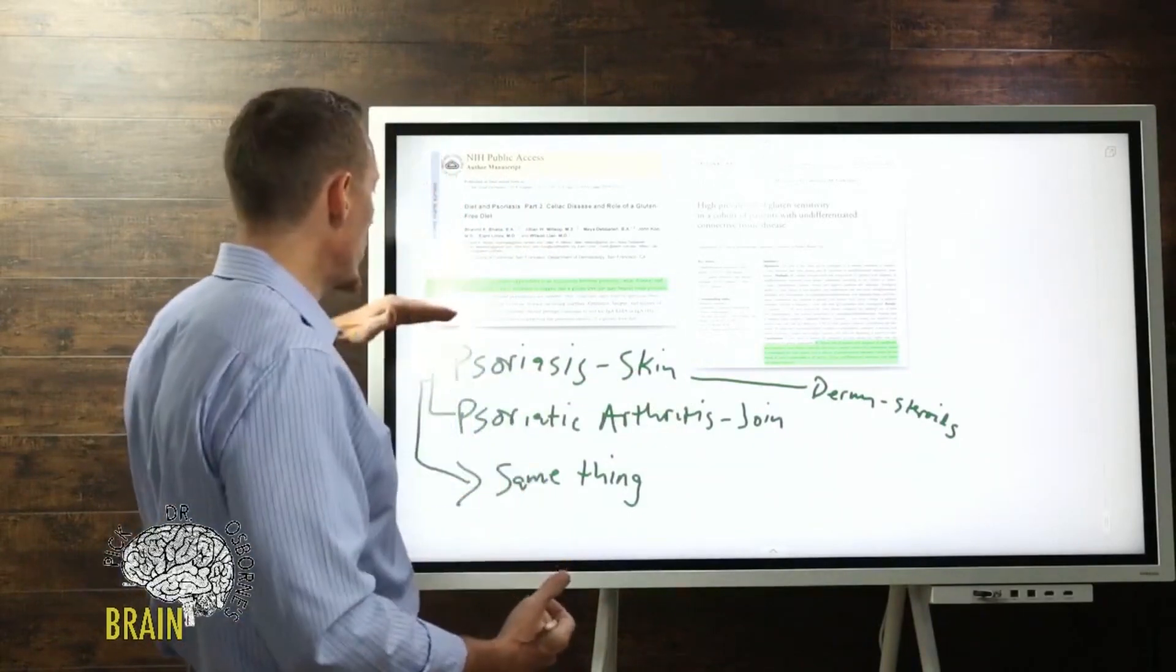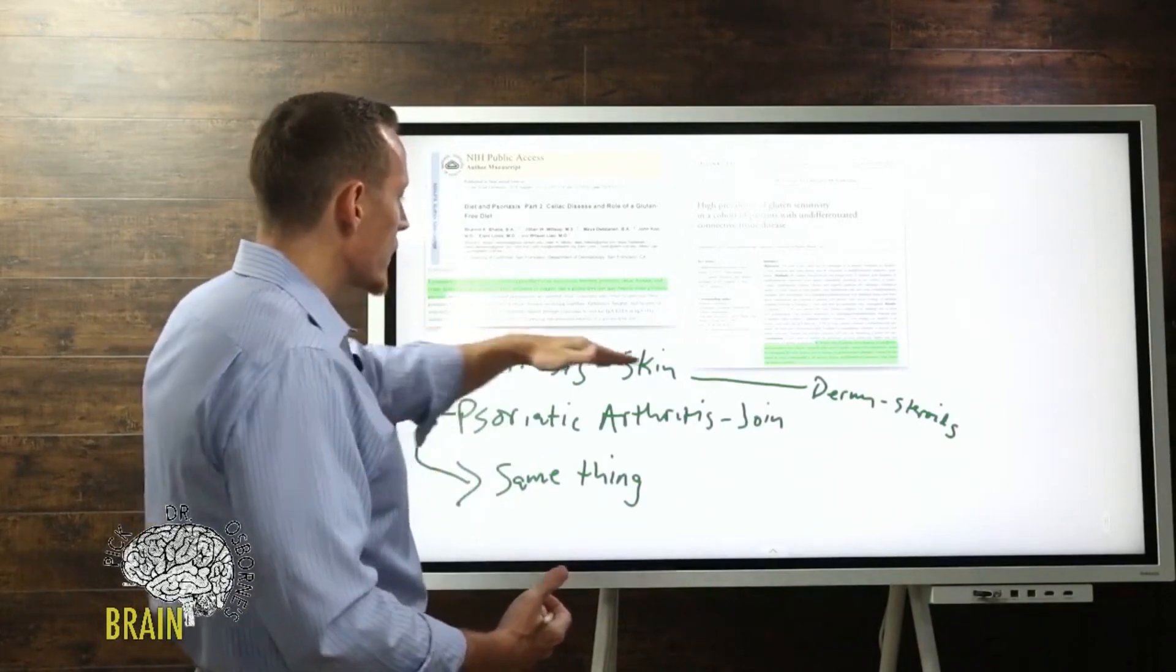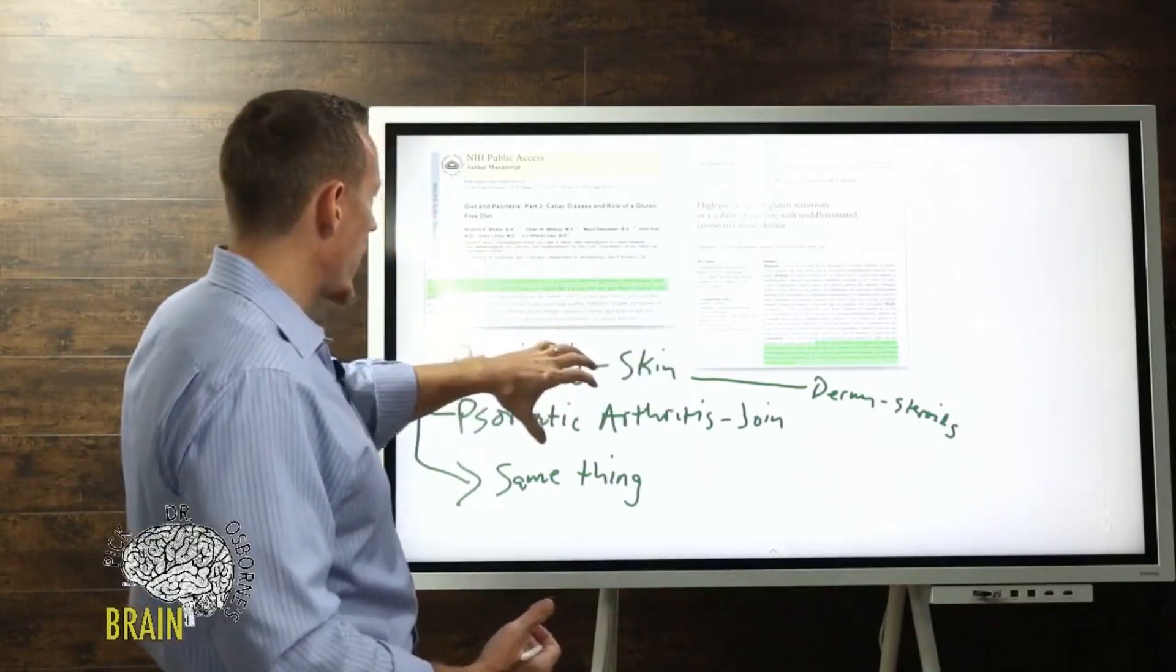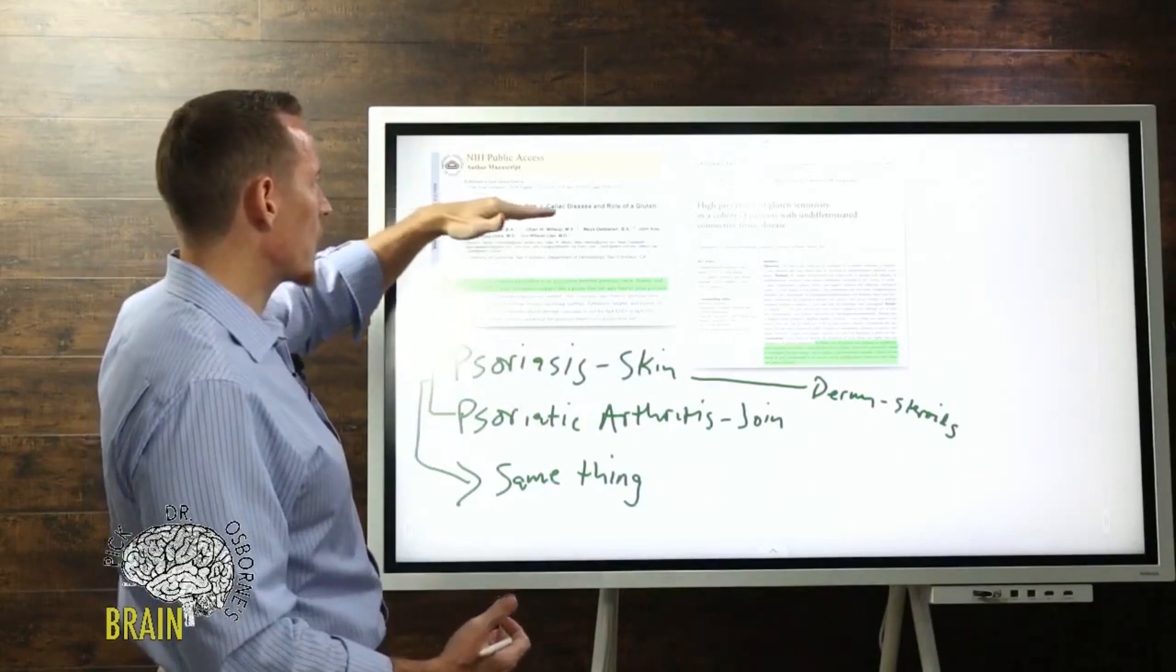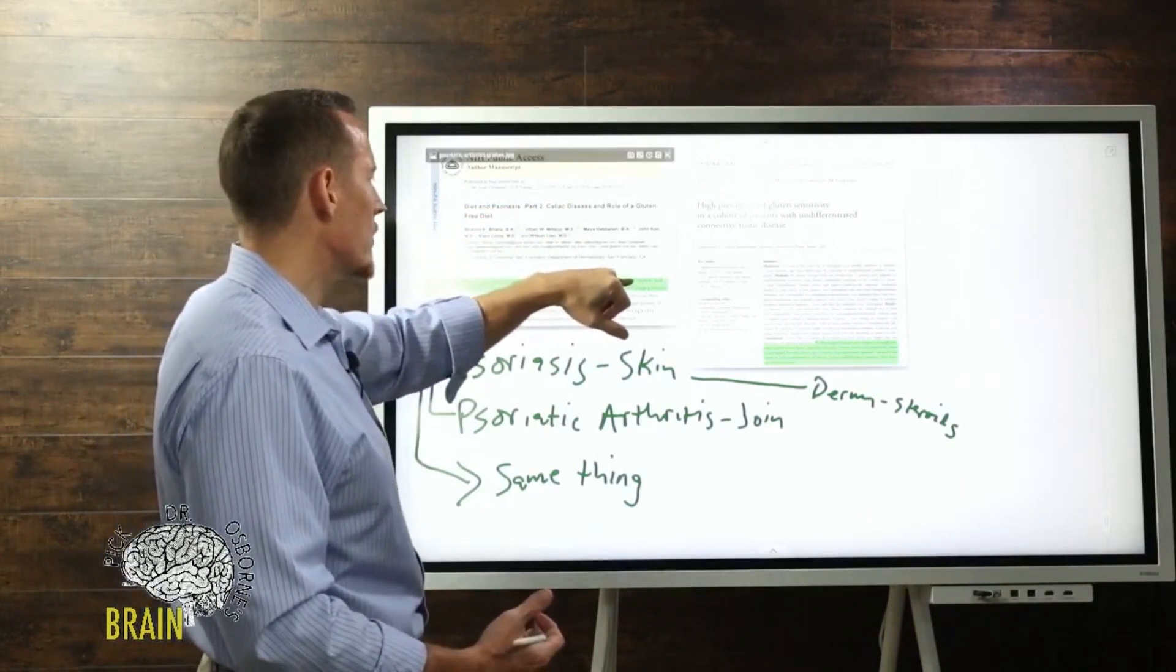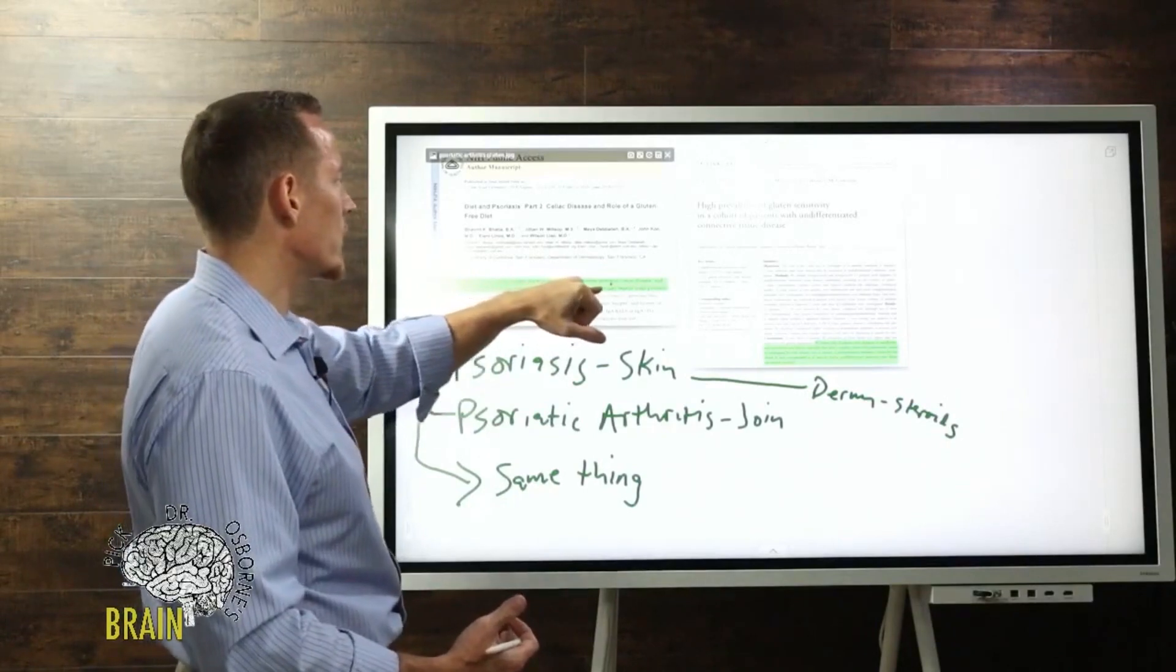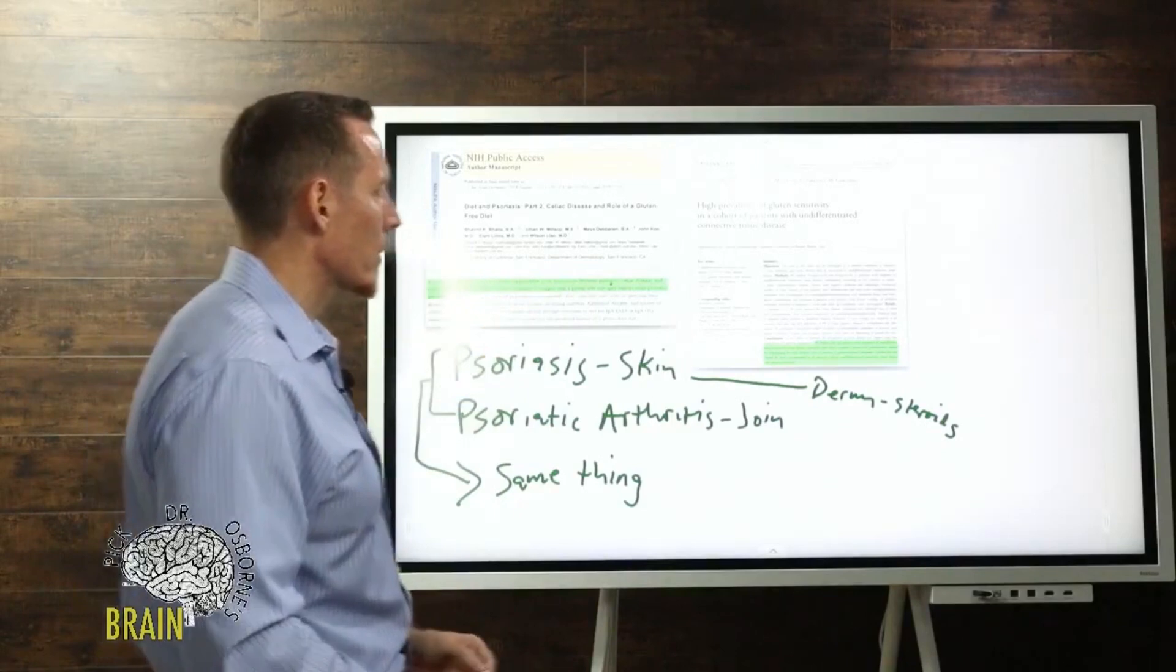I've seen thousands of people with psoriatic arthritis or psoriasis get better when they change their diet. This research study shows: 'Diet and Psoriasis Part Two - Celiac Disease and the Role of Gluten-Free Diet. Epidemiological and clinical studies suggest an association between psoriasis, celiac disease, and celiac disease markers. There's early evidence to suggest that a gluten-free diet benefits those with psoriasis and psoriatic arthritis.'